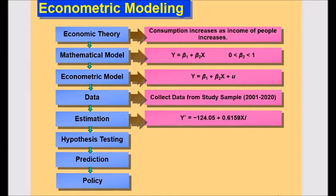the slope coefficient that is also called marginal propensity of consumption is about 0.6159, suggesting that for the sample period, an increase in real income of $1 led on average to an increase of about 61.59 cents in real consumption expenditure.